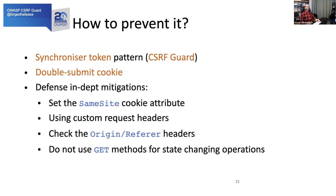There are also defense-in-depth mitigations. The SameSite cookie attribute is the most promising of these. You can also use custom request headers, which can be configured within CSRF Guard. Checking the origin or referrer headers is also useful since both are part of the forbidden headers list and cannot be manually tampered with by scripts — so in most cases it's safe to validate against them. One of the most important practices is to follow basic REST principles, for example not using GET methods for state-changing operations.